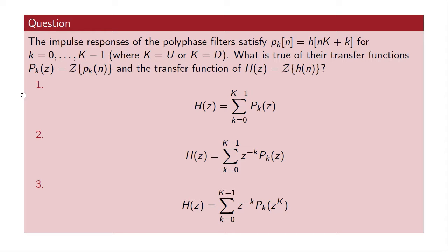In the Z-transform domain, the original filter H of Z is given as the sum of the polyphase filters' Z-transforms, with the polyphase filters' Z-transforms having their power of Z raised to the power of K — where K is either U or D. The Z to the minus K corresponds to the time shift applied to the original impulse response, and Z to the K corresponds to the spacing of samples from H of N selected for the polyphase filters.